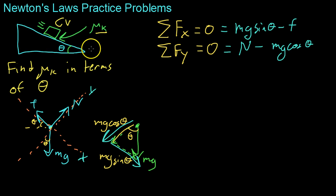So moving both of these over, we get that Mg sine of theta equals the frictional force, and the normal force equals Mg cosine of theta. But wait, we've previously derived an expression for friction in terms of the normal force. And we know that friction is mu, the coefficient of friction, times the normal force.